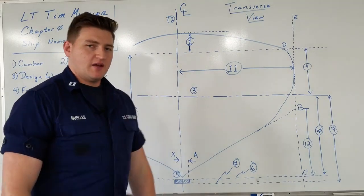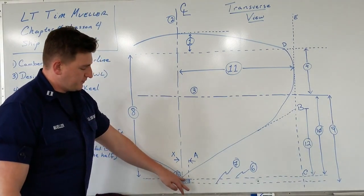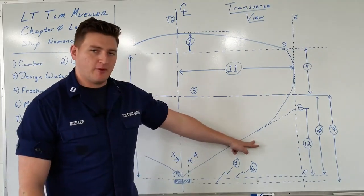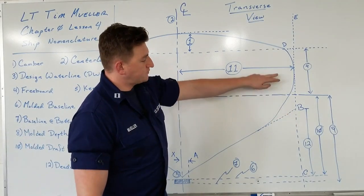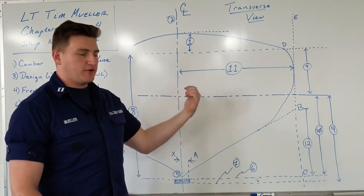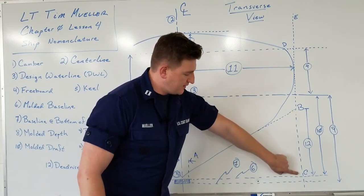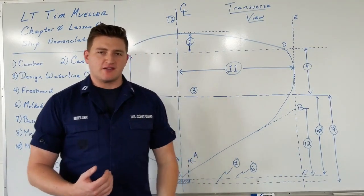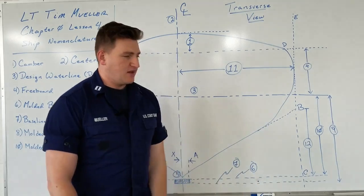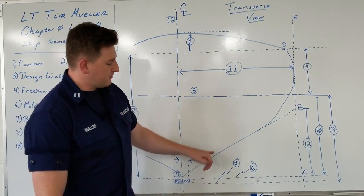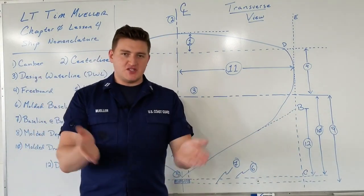The last term on this diagram is dead rise, or rise of the floor. Most hulls are very linear up from the keel to some point. If you continue that line out to where it intersects the one-half molded breadth at point B, that is your dead rise — number twelve runs from B to C. Less dead rise means a more blocky ship with a higher block coefficient, while more dead rise gives you a more V-shaped hull. Block coefficient will be covered later in the video.